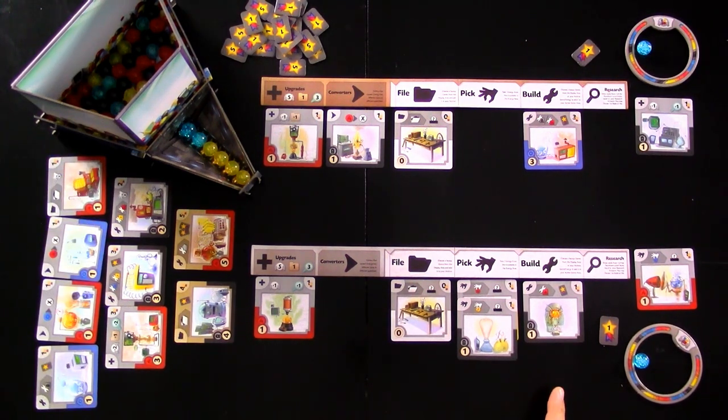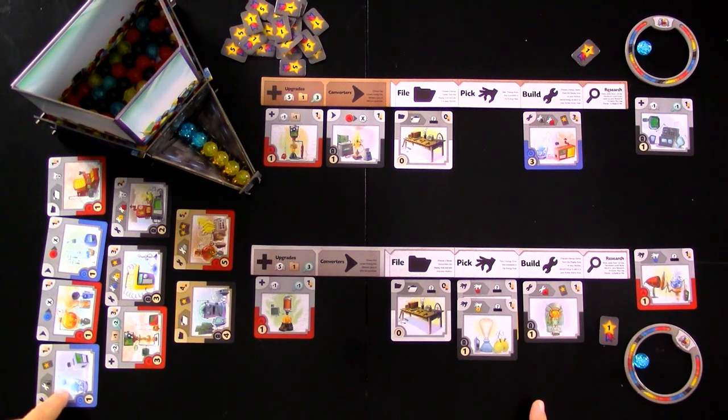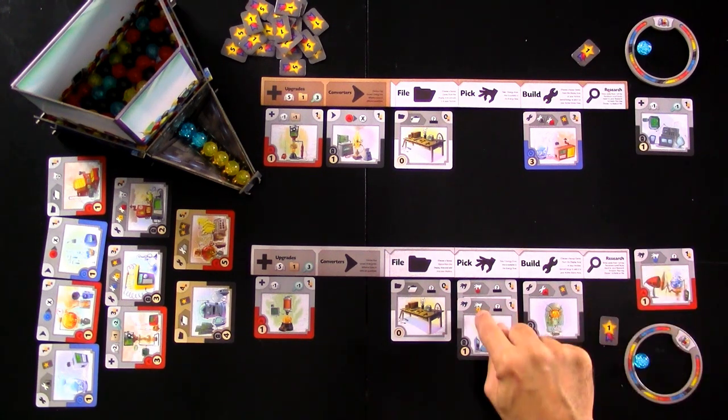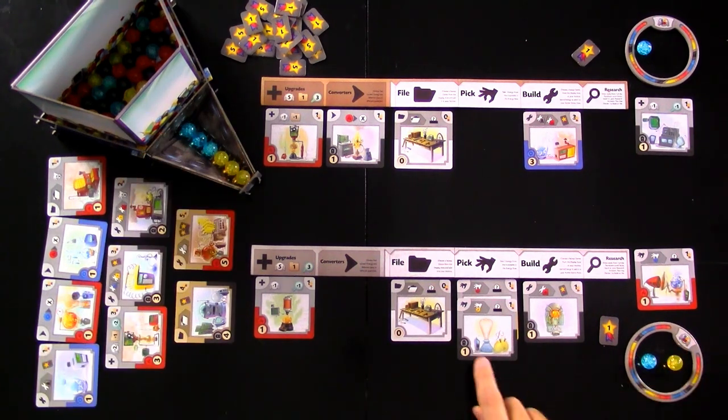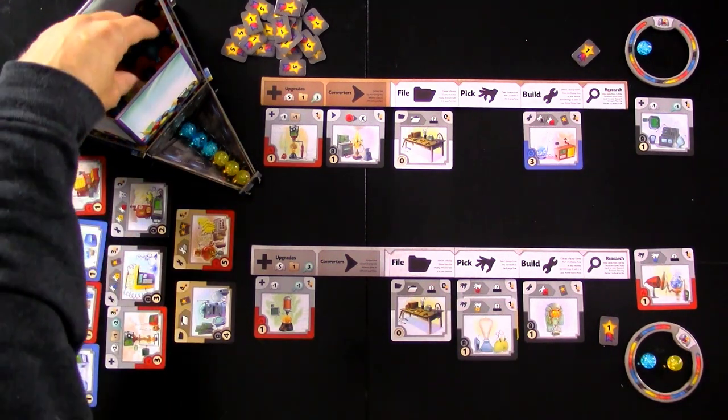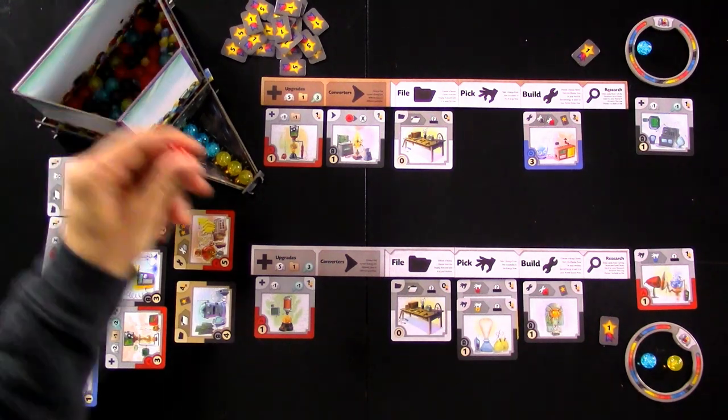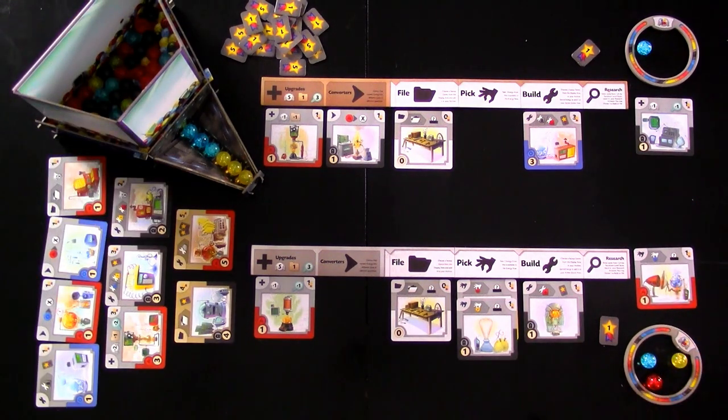Jen's turn. So she is now going to go ahead and... So she could build this blue, but instead, Jen really wants to get this red built. So she's going to pick one of these yellows. And because whenever you pick a yellow, she gets to draw randomly. She's hoping for that red. She got it. All right. So she'll be able to build this next turn. Okay. Cool. So that was her turn.